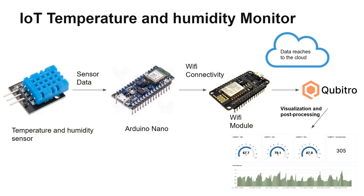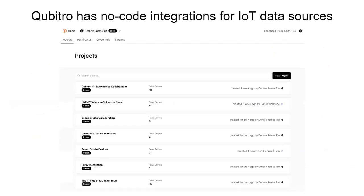When the data reaches the cloud, Cubitro's work comes into action — it visualizes and post-processes the data. They have a Cubitro portal where you can see the real-time data, and they have beautiful widgets to visualize it. Now let me talk about Cubitro features. They have a lot of no-code integration with various IoT data sources. They are connected with RAK Wireless and Seeed Studio — all things IoT enthusiasts would know.